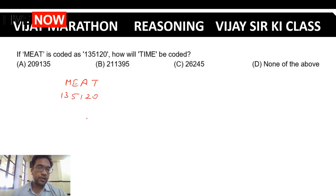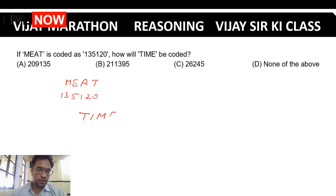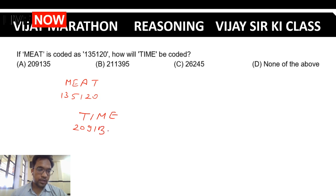The order continues: 23, 28. Now for TIME: T is 20, I is 9, M is 13, E is 5. Finding the coded option for TIME.